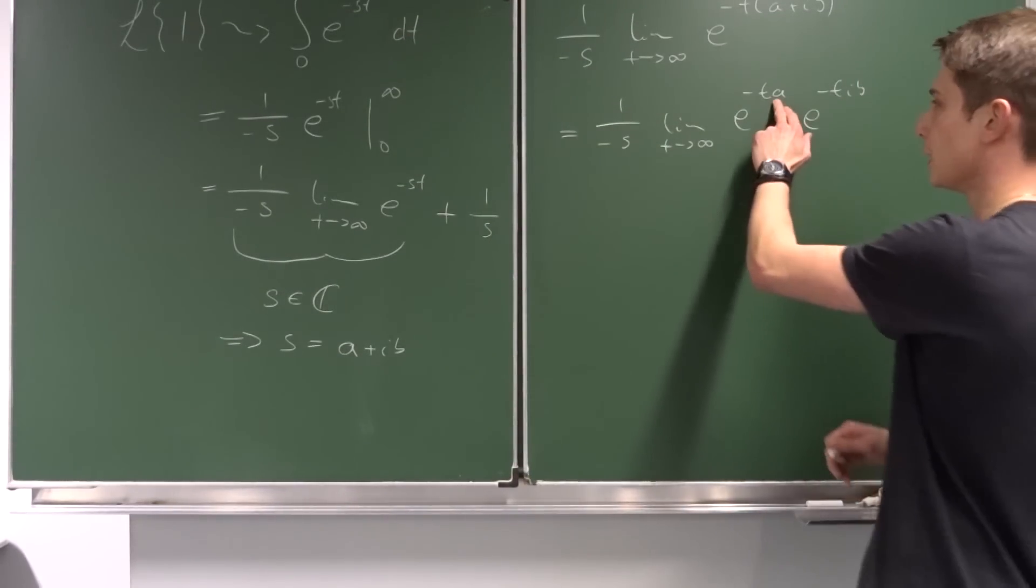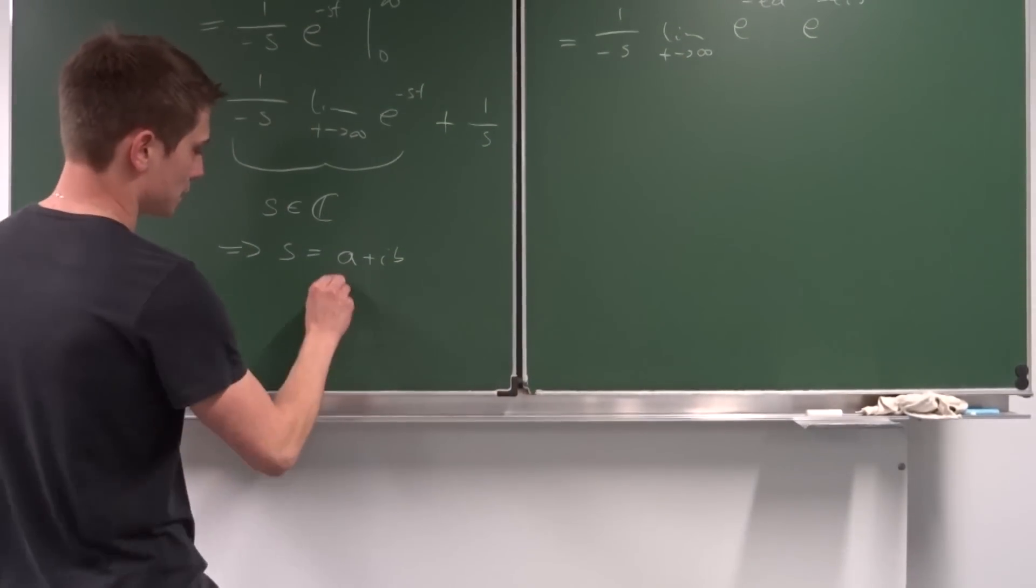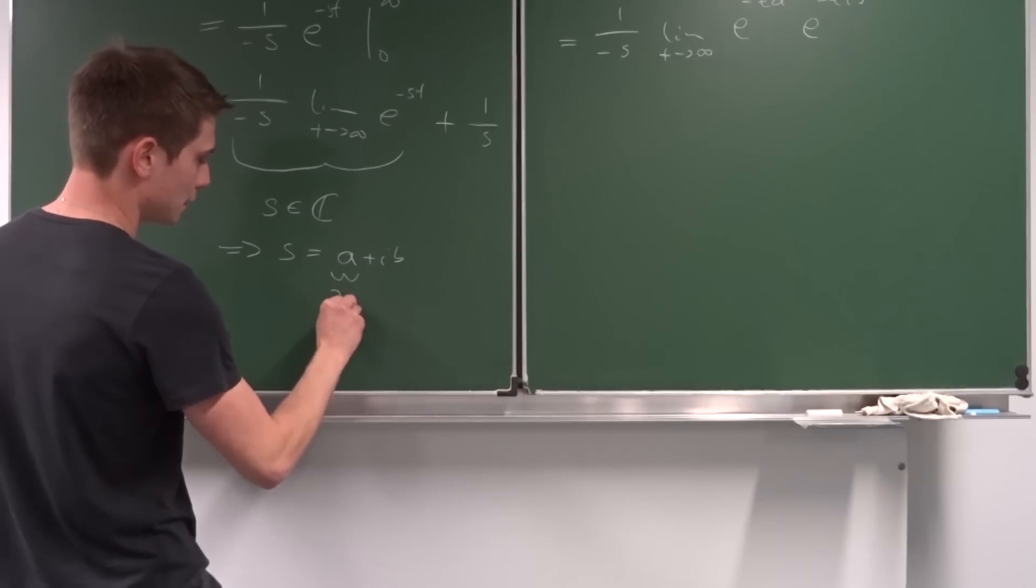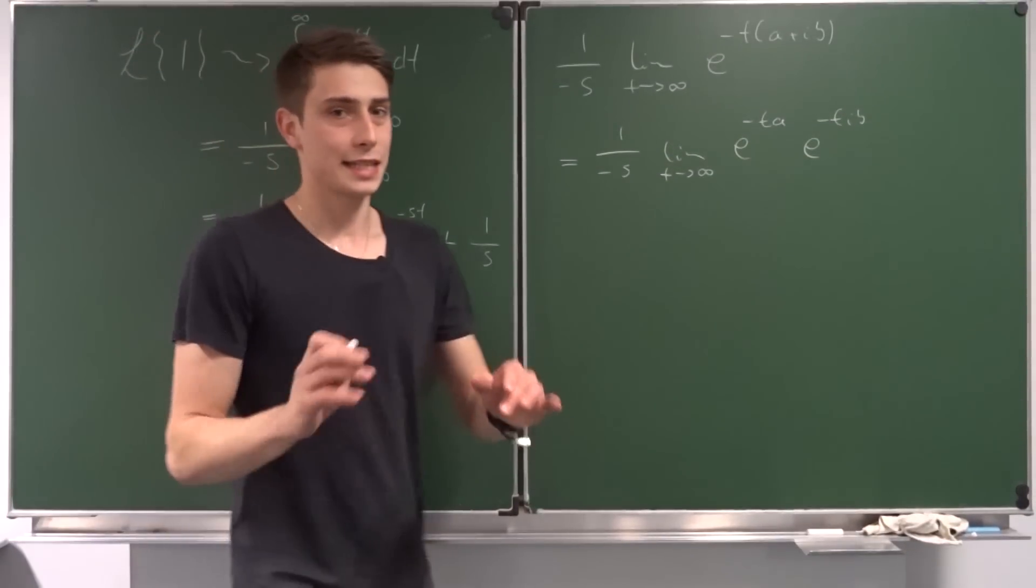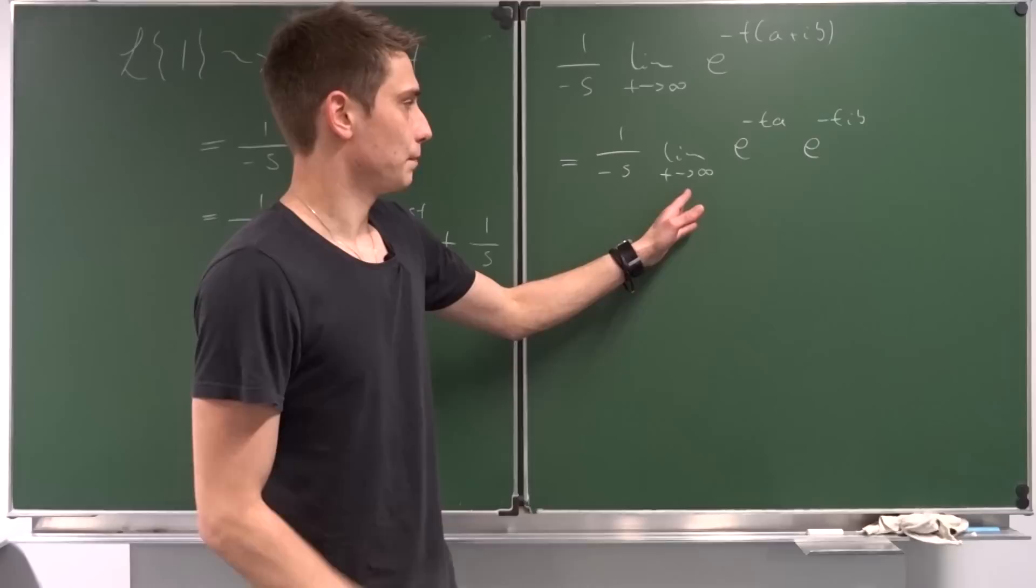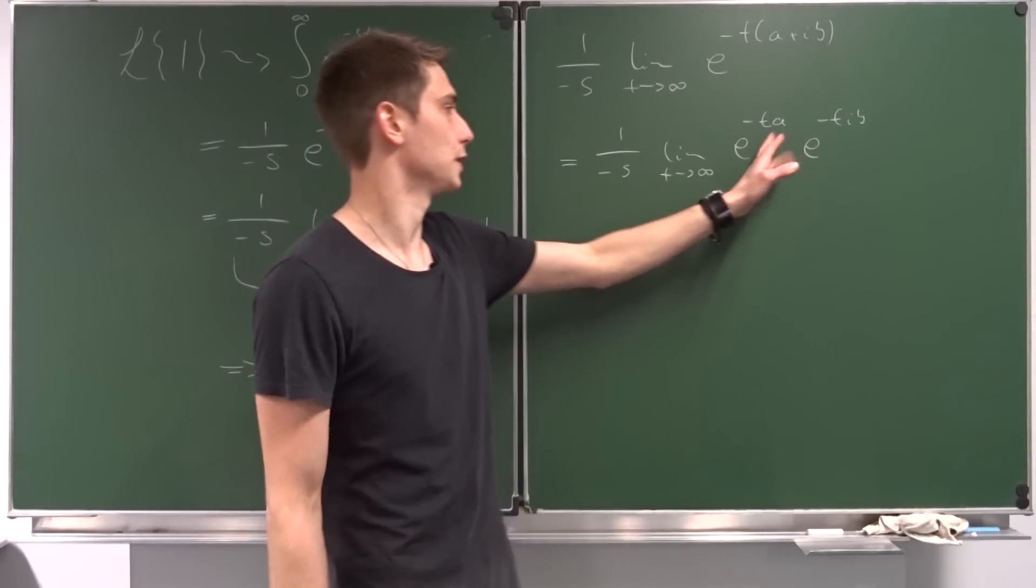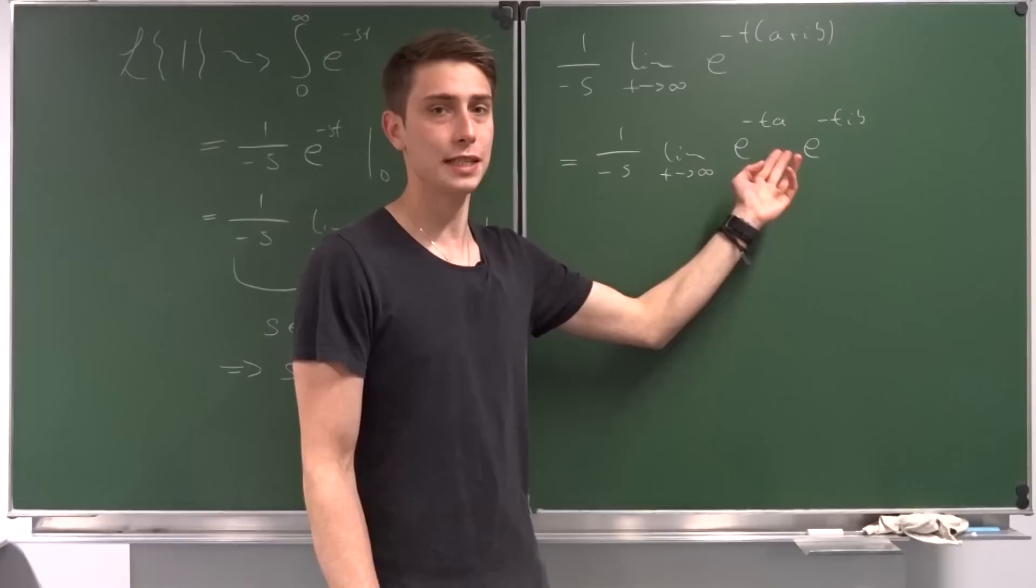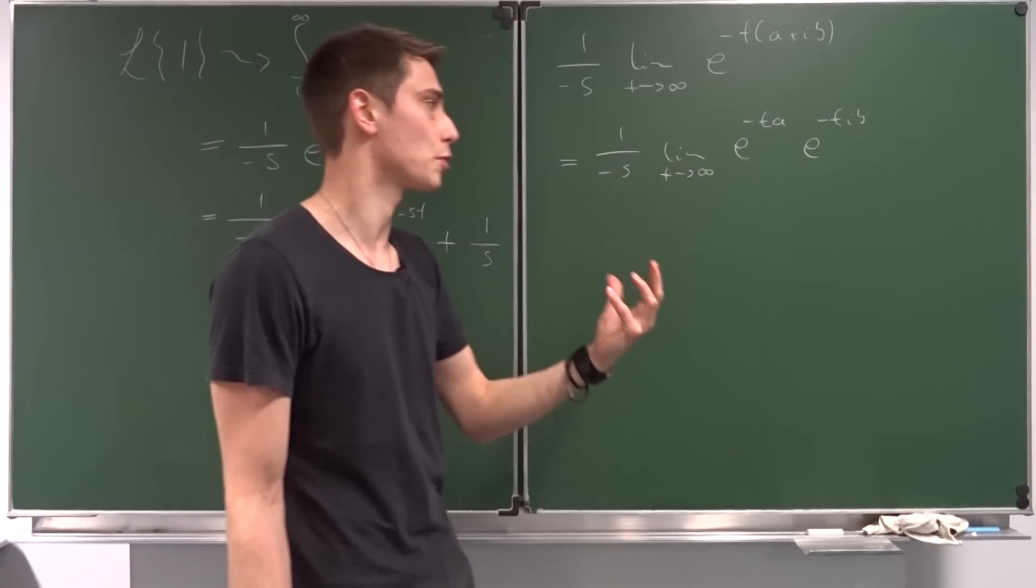This a right here is the real part of the complex number, the real part of s. If you let t approach infinity right here, then this real part, if it's greater than zero in this case, would become e to the minus infinity. And that's one over infinity, which is zero. So that would be nice.